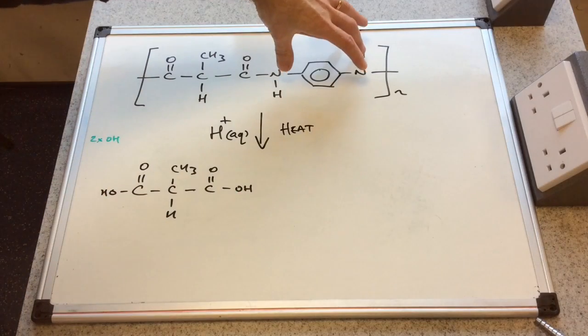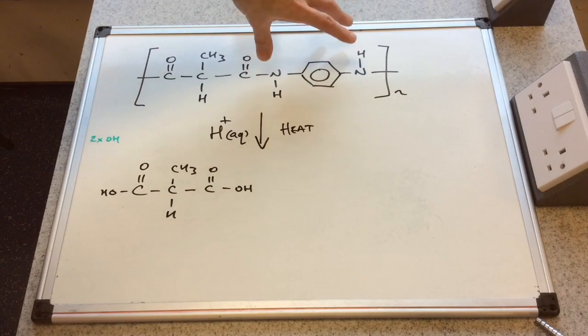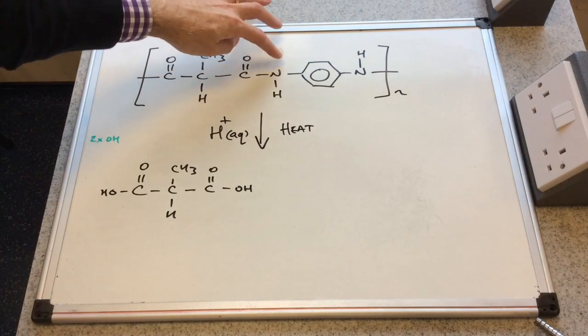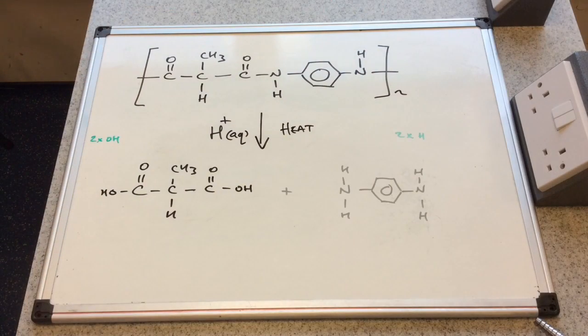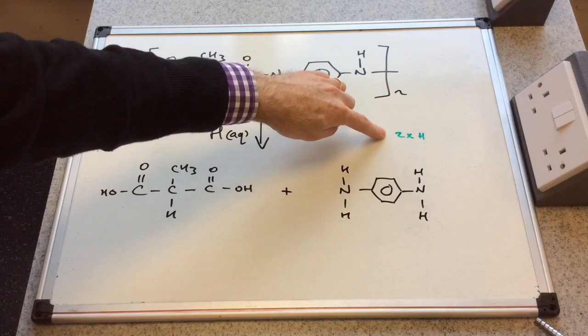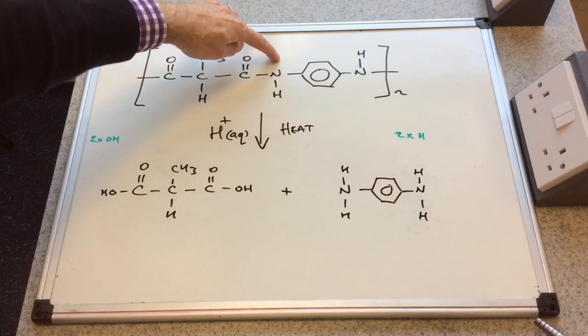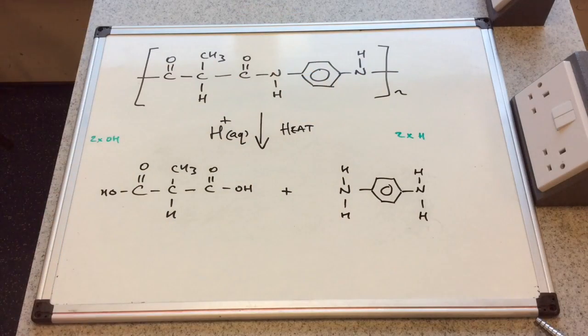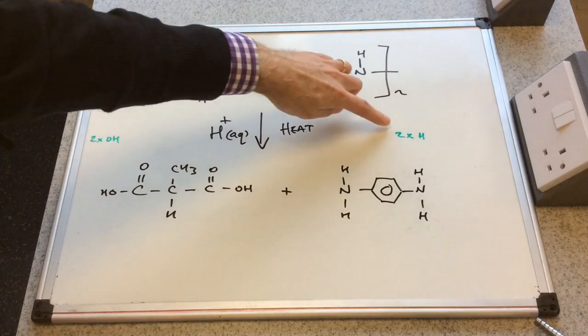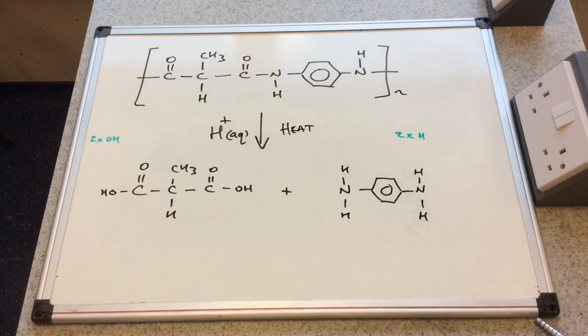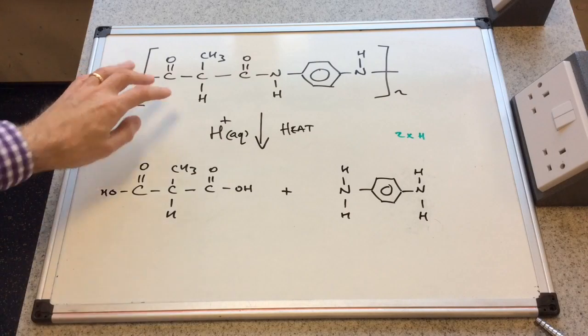So the right hand part of the polymer, once this bond breaks, well this initially would become a diamine. So I'll just quickly draw that up. So there it is there on the right and you can see in green two times H because we've put an H on here and an H on there. So if we just check this we've got two OH's and two H's, so that's essentially two water molecules have been involved per repeat unit.